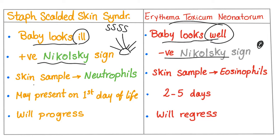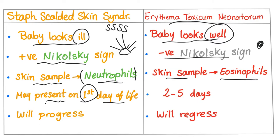With SSSS, a skin sample under the microscope shows predominantly neutrophils. With Erythema Toxicum Neonatorum, the skin sample yields eosinophils. SSSS can present on the first day of life, whereas Erythema Toxicum Neonatorum typically presents when the baby is two to five days old — it is very rare to find it on the first day.